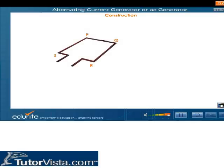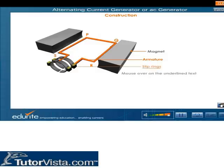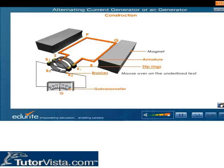An AC generator consists of an armature, a field magnet, and a current collecting arrangement. The armature is a rectangular coil PQRS of many turns of copper wire wound on a soft iron core. The field magnet is a strong permanent magnet having concave poles. The current collecting arrangement consists of slip rings R1 and R2 and brushes B1 and B2.